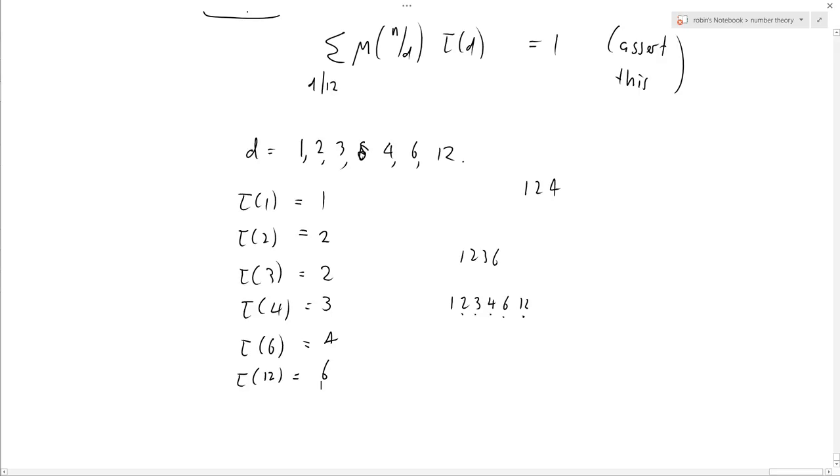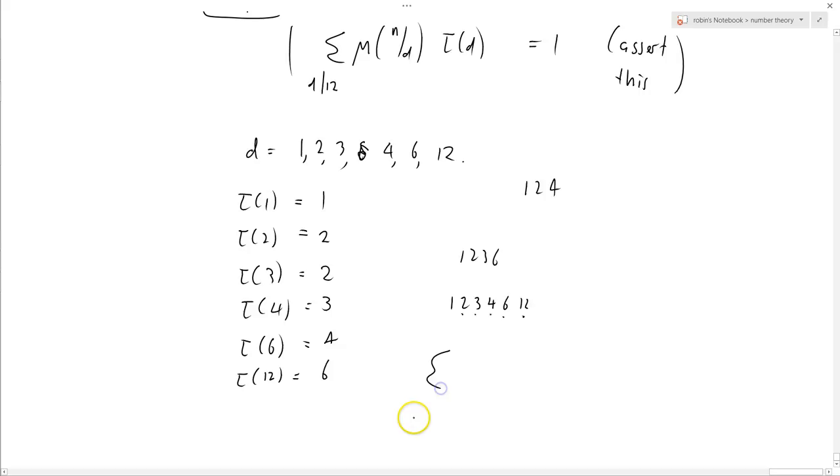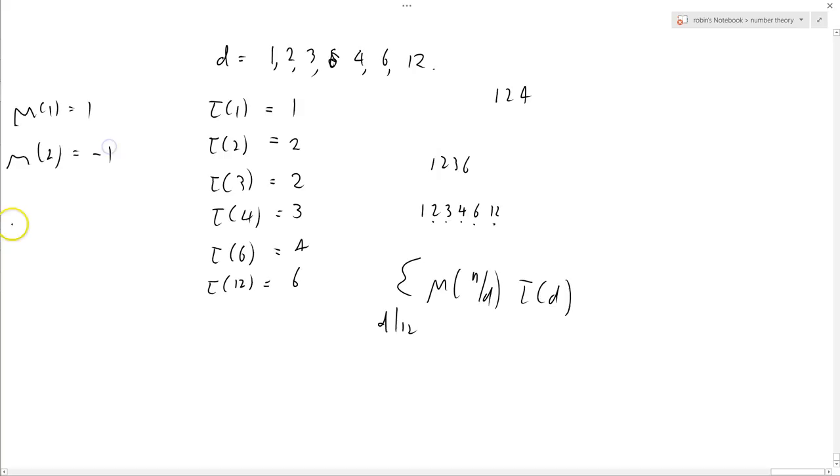Let's just run through the formula. So we need sum d divides 12 of μ(n/d)τ(d). We've got all our τ values here. We should have the Möbius function as well. Let's try the Möbius function: μ(1) equals 1, μ(2) equals -1, μ(3) equals -1, μ(4) equals 0 because it's got a square in it, μ(6) equals 2 times 3 so it's -1 squared which is plus 1, μ(12), that's got a 4 in it so that's going to be 0. Actually I should have done this first and then I could have avoided all this work. Well, let's write it out and see what happens.